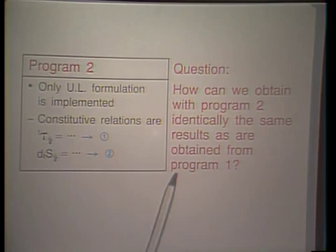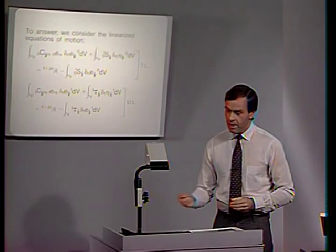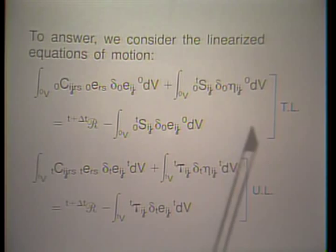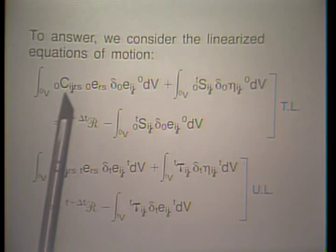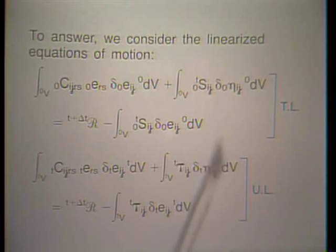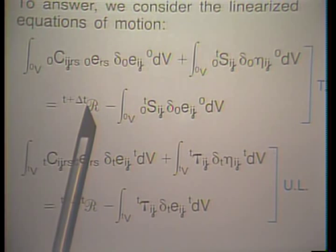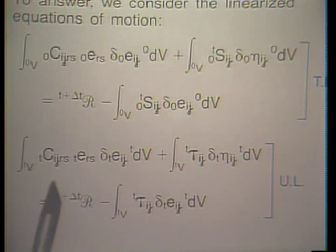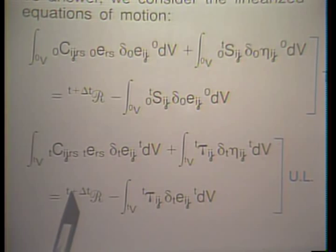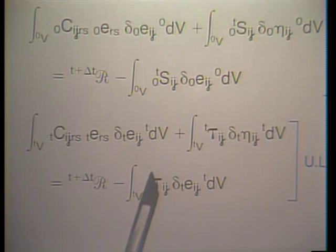To answer this question, we have to go back to some derivations discussed in an earlier lecture. The governing continuum mechanics equation corresponding to the total Lagrangian formulation contains the incremental stress-strain law with the tangent material tensor, the second Piola-Kirchhoff stress, and the total external virtual work on the right-hand side. In the updated Lagrangian formulation, we have a corresponding equation with a constitutive relation and the Cauchy stress, along with the total external virtual work.